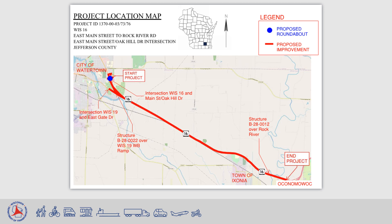The first construction project is the reconstruction of the intersection of Wisconsin 16 and East Main Street, Oak Hill Road, which starts just west of the intersection on Wisconsin 16 and continues just east. The intersection reconstruction also includes East Main Street just west of the intersection, East Main Street, Oak Hill Road, and the Frontage Road on the east side of the intersection.